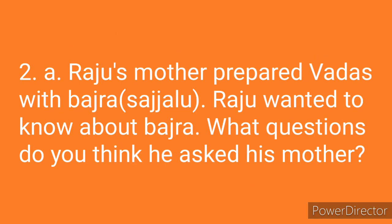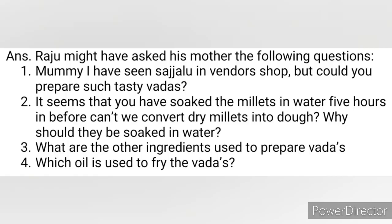Next, Questioning and Hypothesis. A: Raju's mother prepared vadas with Bachra, that is Sajalu. Raju wanted to know about Bachra. What questions do you think he asked his mother? Answer: Raju might have asked his mother the following questions. First one: Mommy, I have seen Sajalu in the vendor's shop, but could you prepare such tasty vadas? Second one: It seems that you have soaked the millets in water five hours before. Can't we convert dry millets into dough? Why should they be soaked in water?